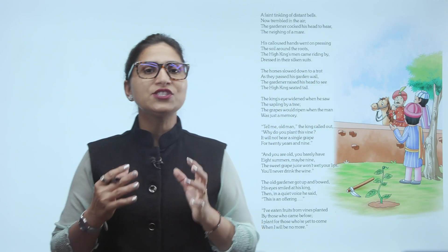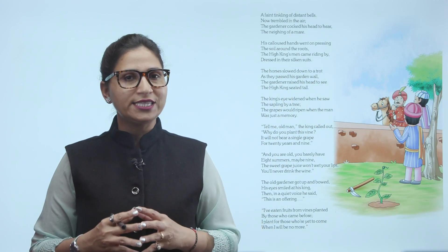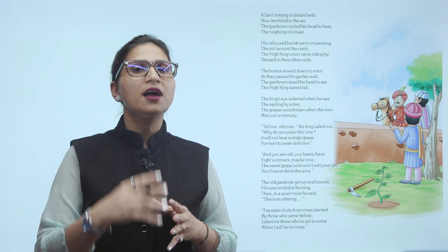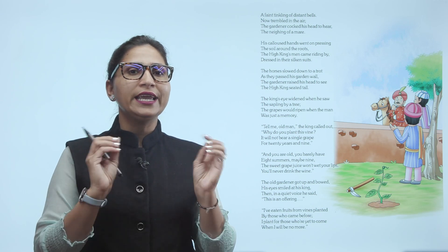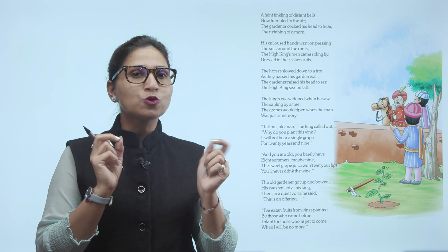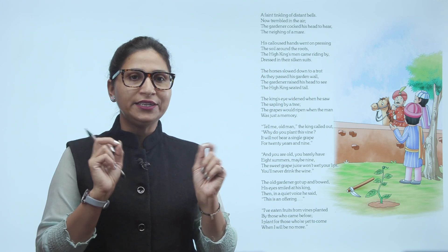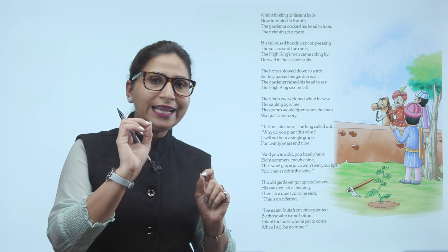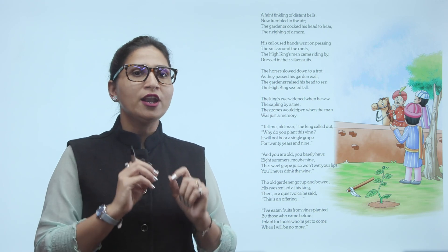A faint tinkling of distant bells now trembles in the ear. The gardener cocked his head to hear the neighing of a mare. Toh yahan pe bata hai — faint tinkling of distant bells — matlab usko kya ghantio ki awaaz aa rahi hai, jayse ghantio ki awaaz hoti hai, toh tinkling ki awaaz aa rahi hai wahan par, aur kuch aisa lag raha hai ki kuch hawa mein baj raha hai.